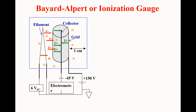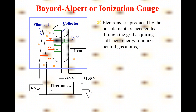The Bayard-Alpert or ionization gauge works as follows: electrons produced by the hot filament are accelerated through the grid, acquiring sufficient energy to ionize the neutral gas atoms. The filament is heated and emits electrons, which are accelerated toward the neutral gas atoms and ionize them.